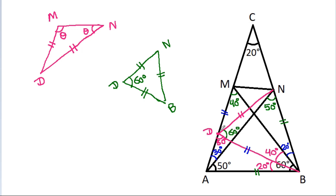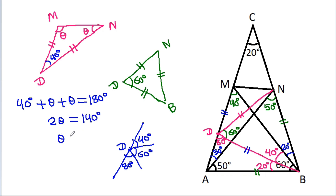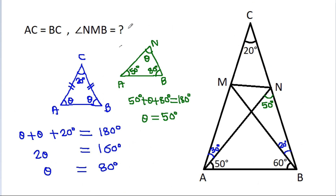This angle will be 60 degrees and this point is D. This angle is 80 degrees and this angle is 60 degrees, so this angle will be 40 degrees. In triangle DMN, 40 degrees plus theta plus theta equals 180 degrees, so 2 theta equals 140 degrees and theta equals 70 degrees. This angle is 40 degrees, so this angle will be 30 degrees. Therefore angle NMB equals 30 degrees.